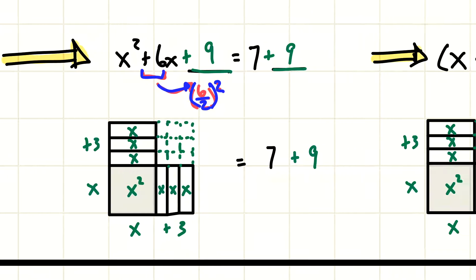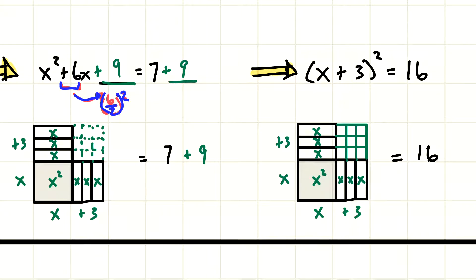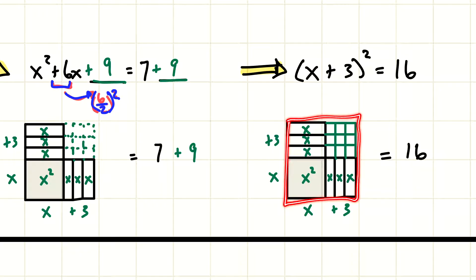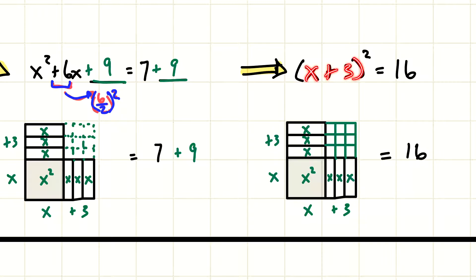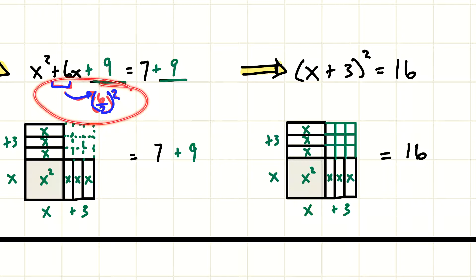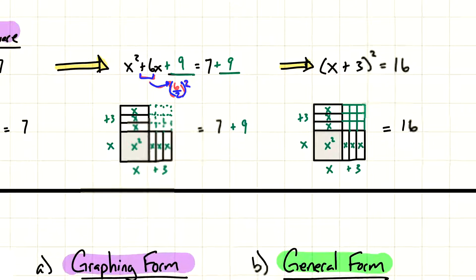The shortcut: take the coefficient 6, divide it by 2, then square it — six divided by two is three, three squared is nine. That tells us what number to add. Since we added nine to both sides, this gives us our complete square. We can rewrite this in perfect square form as x plus 3 squared equals 16, because the dimensions of this square are x plus 3 and x plus 3. Remember the shortcut to figure out the magic number to add to both sides.